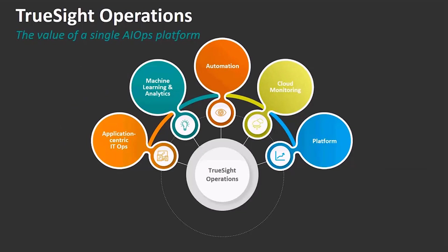To summarize, TruSight Operations — through these five key areas of capability — provides an application-centric approach to IT ops driven by analytics, essentially enabling your own AI ops platform. This is why now is the time to move to TruSight.